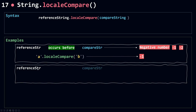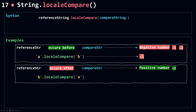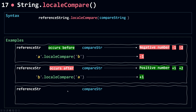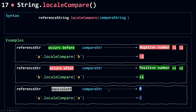When the reference string occurs after the compare string — for example 'b' and 'a' — calling localeCompare will return a positive number: plus one for some browsers and plus two or even plus three for others. And when the reference string is equivalent to the compare string — for example 'a' and 'a' — you will get zero. So localeCompare returns a negative number when the reference string occurs before the compare string, a positive number when it occurs after, and zero when they are equivalent.